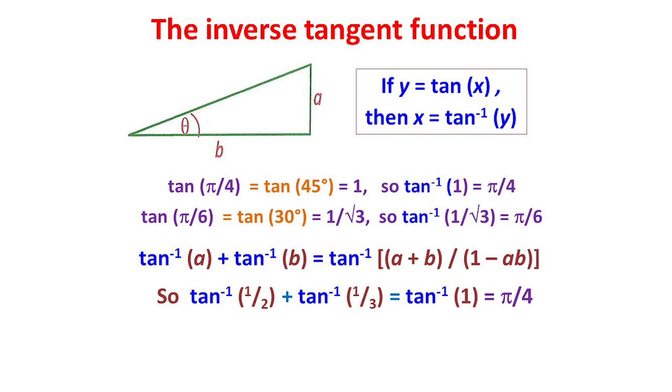For example, to add tan⁻¹ 1/2 and tan⁻¹ 1/3, we get tan⁻¹ of (1/2 + 1/3) over (1 - 1/2 times 1/3), which simplifies to tan⁻¹ of 1, which is π/4.